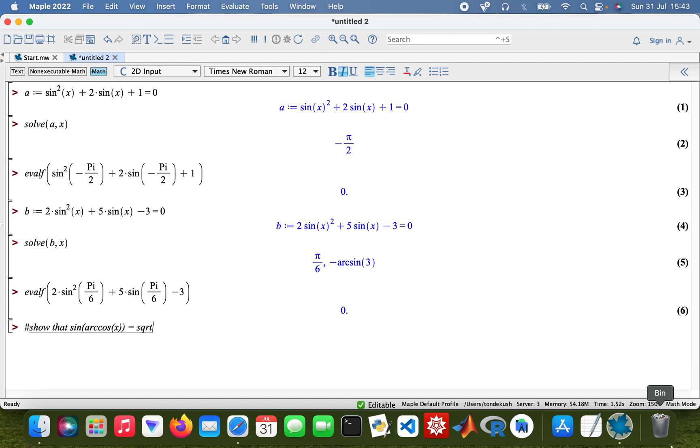...arccos(x) equals the square root of 1 - x². Okay, so what I need to do now is just evaluate the function. So sin(arccos(x)) equals √(1 - x²), which is true.